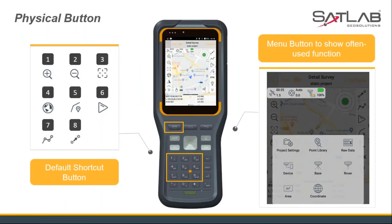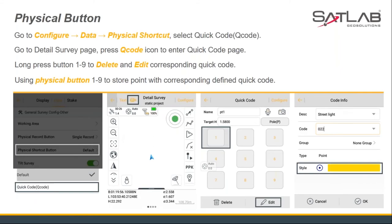Furthermore, some users prefer to use the physical buttons of the SHC-30 controller, and SETServe supports this. The menu button can be used to display commonly used function menus. The number keys 1 to 8 can be used in the details survey as default shortcut buttons. In addition, number keys 1 to 9 can also be set as shortcut keys for quick code point collection. Code means you can add a description to collected points and change their shape and color. The shortcut content of physical number buttons can be changed to quick code in the configure data physical shortcut option.